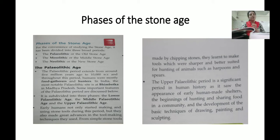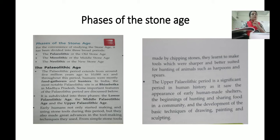People who first started using stone as a tool went from simple stone tools made by chipping stones, to making tools that were sharper and better suited for hunting animals — such as harpoons and spears. They shaped the stone to be sharp and pointed, making weapons and other tools used for hunting animals.